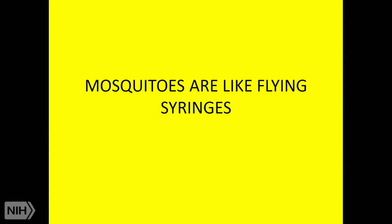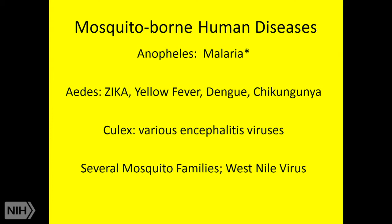Why are they flying syringes? Because of their capacity to transmit diseases, not just to man. Previously in this course, there have been discussions of the Aedes aegypti mosquito in relationship to Zika, dengue, and some mentions of yellow fever and chikungunya. But today's attention is directed to Anopheles mosquitoes, which are the vectors of the various types of malaria.